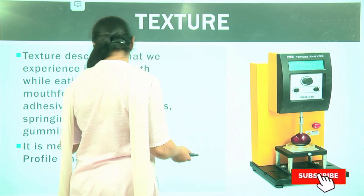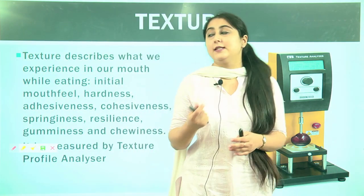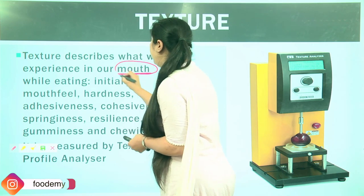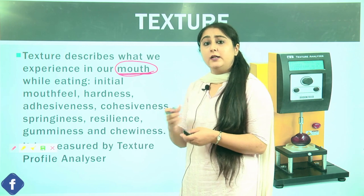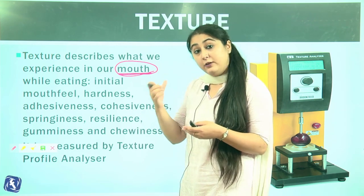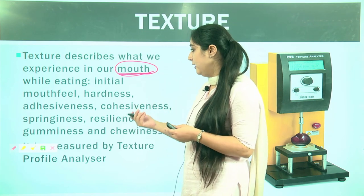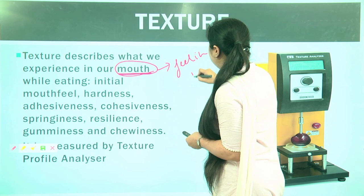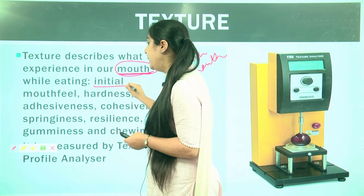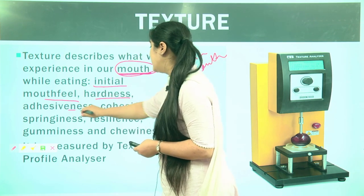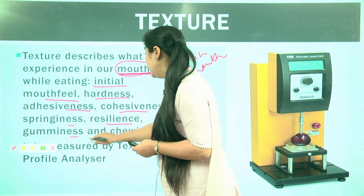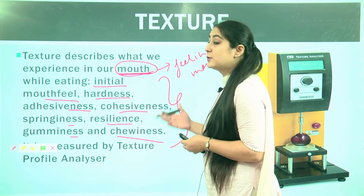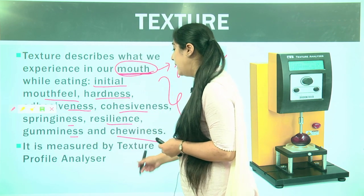First, an introduction to what exactly texture is. Texture describes what we experience when we are consuming a food product in our mouth — what kind of feel a material gives in the mouth, whether it is very sticky, sticking too much to the mouth, or a very hard food material such as hard-boiled candies. While eating, we can experience hardness, adhesiveness, cohesiveness, springiness, resilience, gumminess, and chewiness. All of these attributes together are responsible for giving texture to the food product.